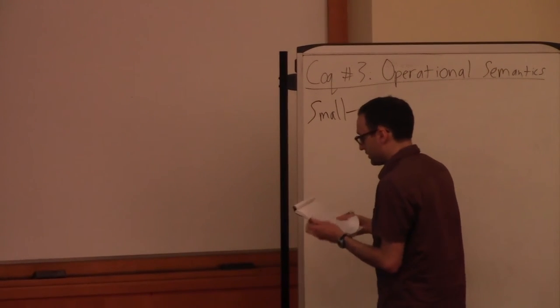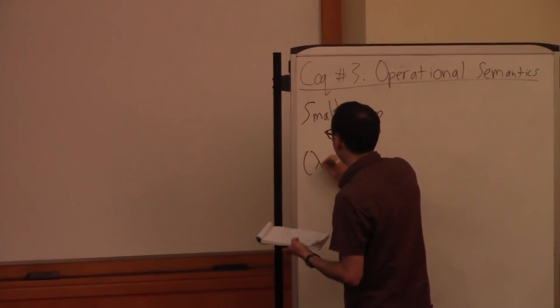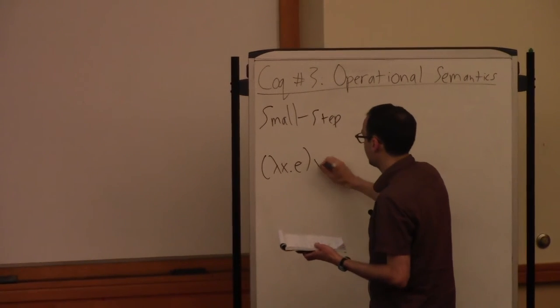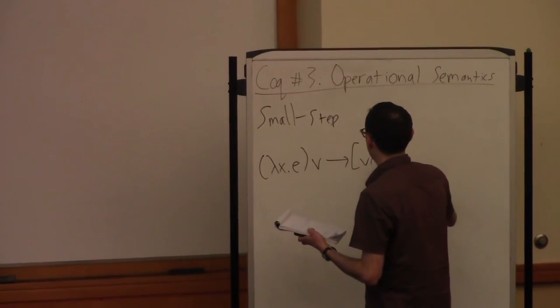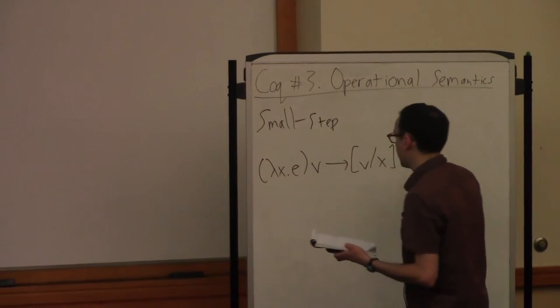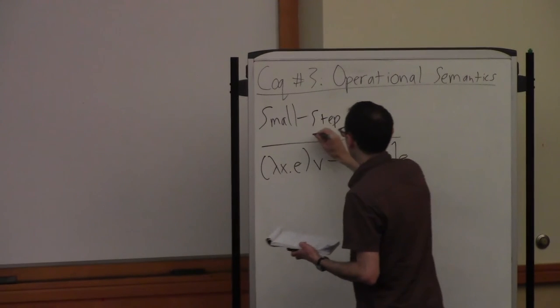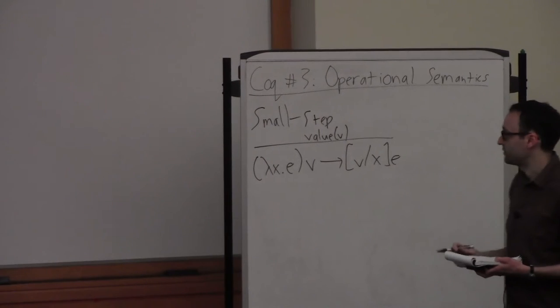The first rule here is kind of the most fundamental one. It tells us what to do when we are ready to actually call a function. So we have some lambda abstraction applied to a value. The way we run this is we substitute in the body of the lambda abstraction in the usual way. And this rule only works when this argument V is a value.